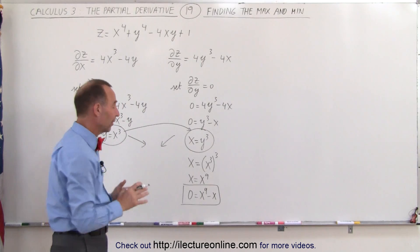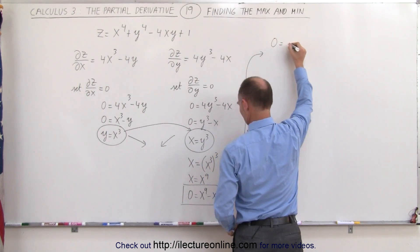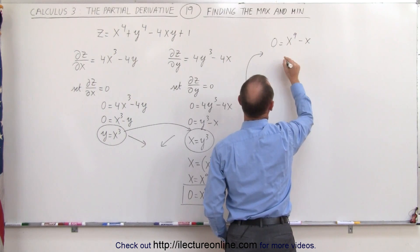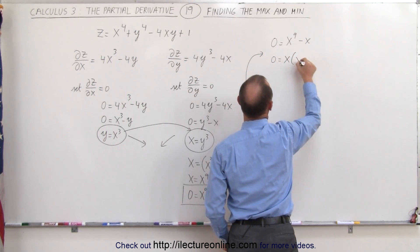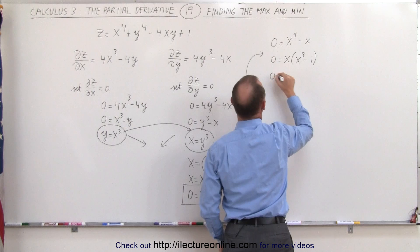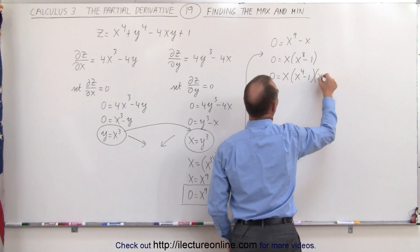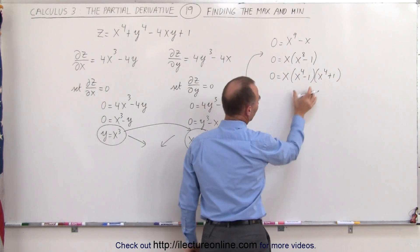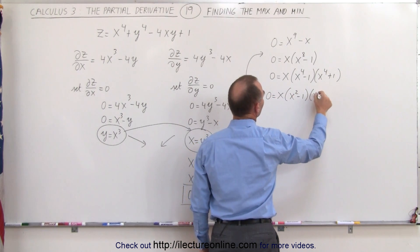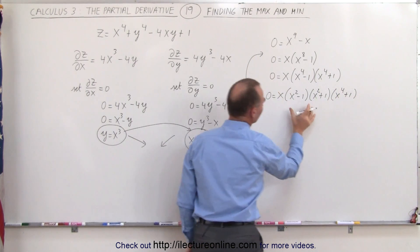Now we're going to solve this for x. We have 0 equals x to the 9th minus x. First, we factor out an x: 0 equals x times x to the 8th minus 1. This can then be factored as 0 equals x times x to the 4th minus 1 times x to the 4th plus 1. Next, we factor further: 0 equals x times x squared minus 1 times x squared plus 1 times x to the 4th plus 1.